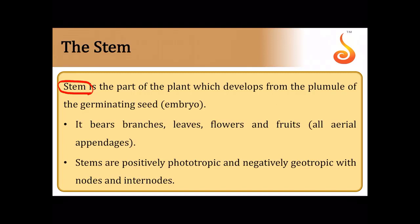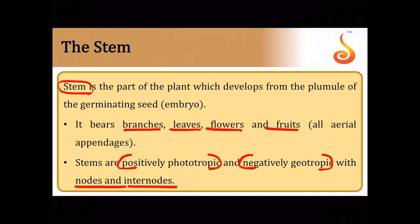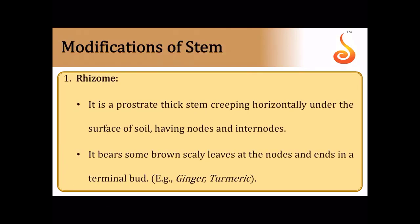The stem is positively phototropic and negatively geotropic. In the stem, special parts called nodes are where branches, leaves, or flowers emerge. The area between two adjacent nodes is referred to as the internode. Now we will look into some of the modifications of the stem, beginning with underground modifications.